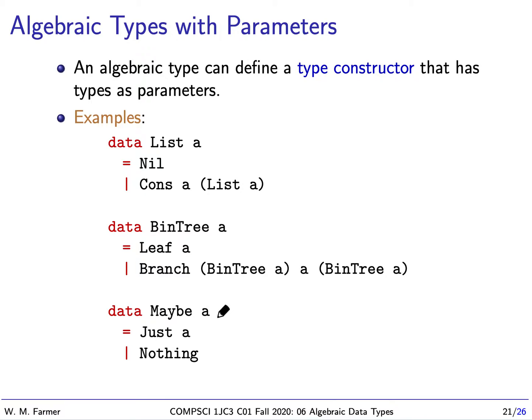So for instance, if we had maybe integer, just integer would mean yes we have an integer. Nothing would mean we don't have an integer, which means it's undefined. It's something similar to, for floating point numbers, something like not a number. So this is very useful, and it's the principal way we can deal with partial functions by defining them using the maybe algebraic type.